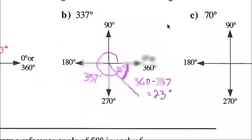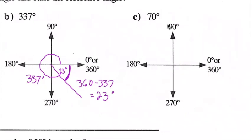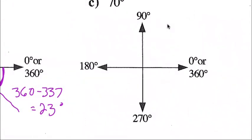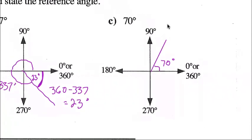Question C: 70 degrees. Positive rotation, 70 degrees somewhere in quadrant one. Draw the angle, label it 70 degrees. In this case the reference angle is the same as the rotation angle — to the nearest x-axis is still this one right here, so it's still 70 degrees.